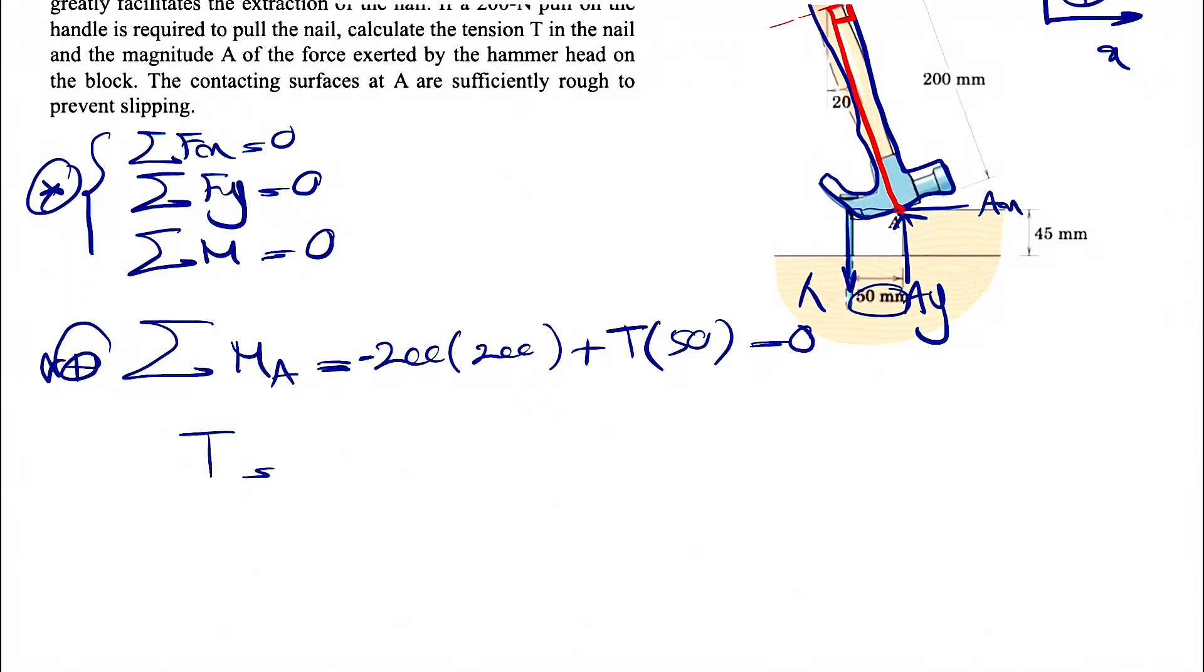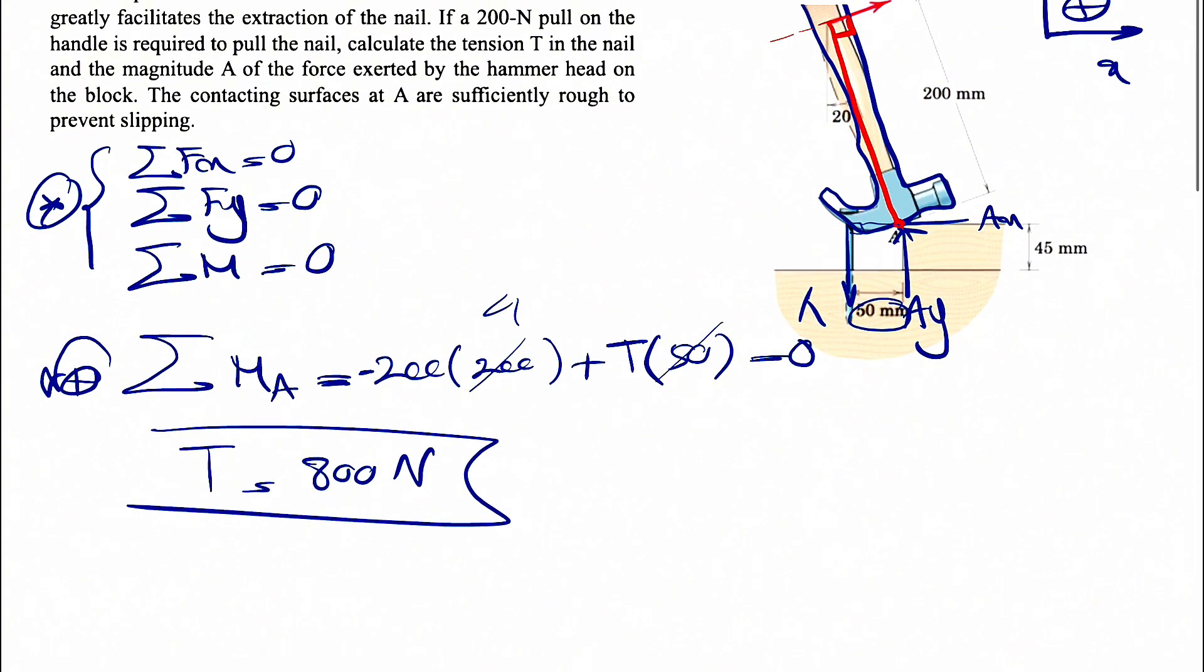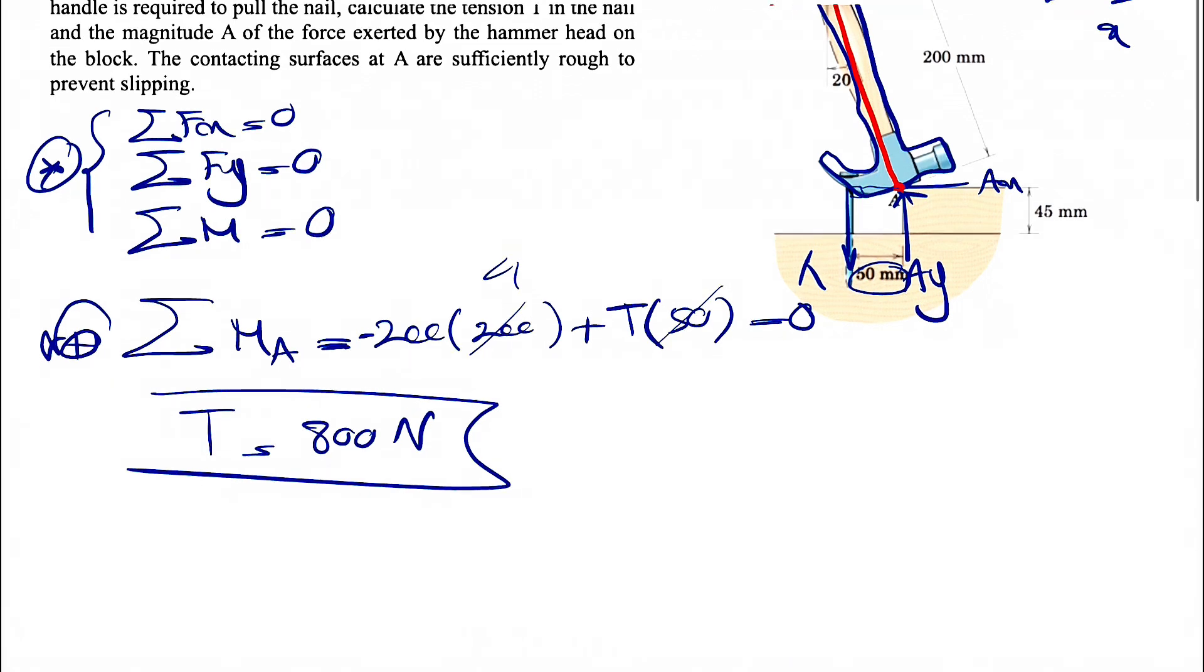So plus T, distance would be the vertical distance to the line of action, which we know is 50. So this will be equal to zero. And we can find the tension. Just cancel this out, we get 800 for our T. We found the first unknown that the question was asking.